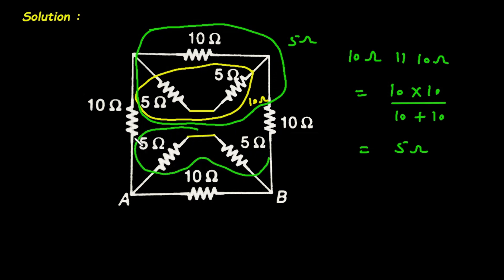So it will be simply, let's take different color. So it will be simply 10 ohm. And again this 10 ohm and 10 ohm are connected in parallel. So their equivalent resistance will be 5 ohm. So let's redraw this network first.